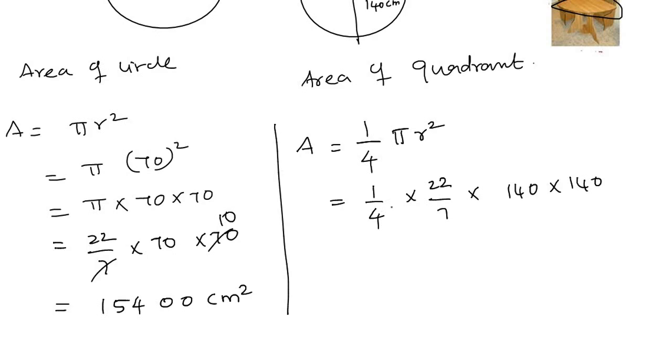First, 4 cancels to 2 times, and then 7 cancels to 20. So 1 by 2, 22 into 5 into 140.